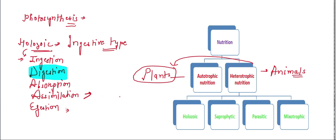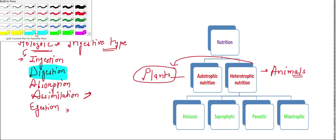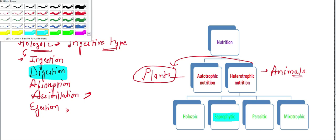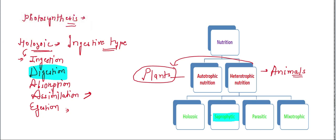Saprophytic nutrition is where the organism feeds on dead organic matter produced by plants and animals. Examples of saprophytic organisms are bacteria and fungi. In fungi, you can particularly give the name of Agaricus — mushroom — as a saprophytic organism. You can also give the example of Rhizopus as a saprophytic organism.